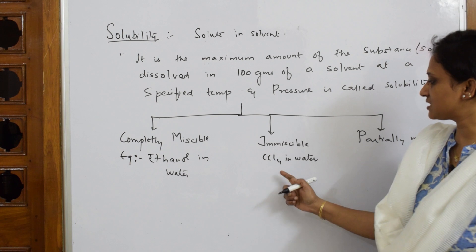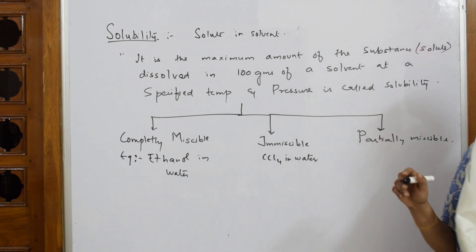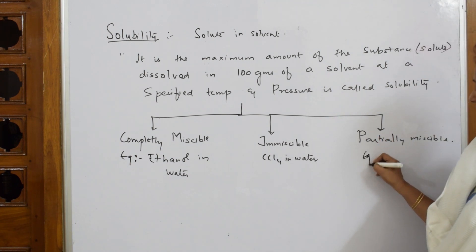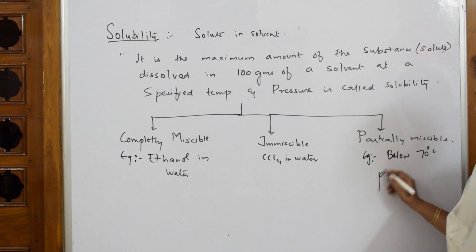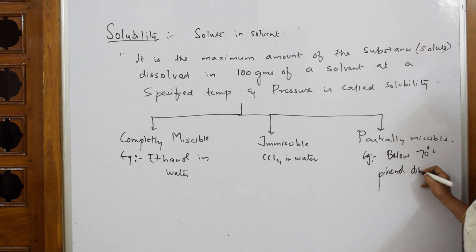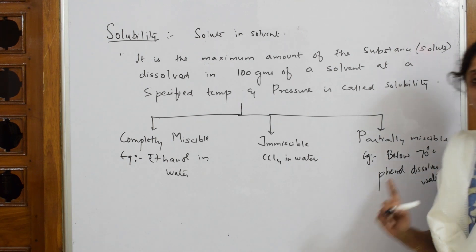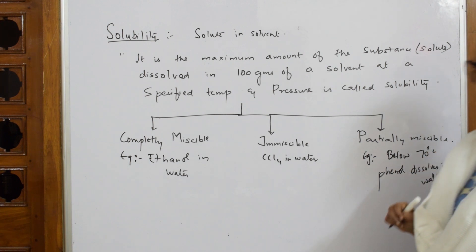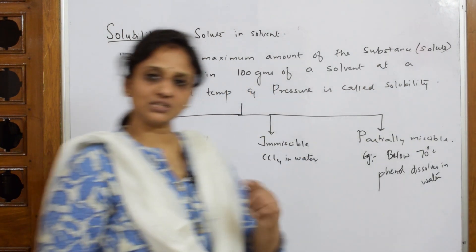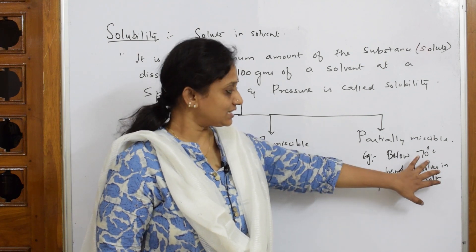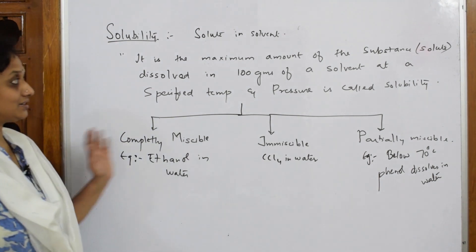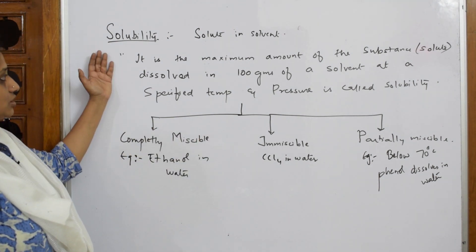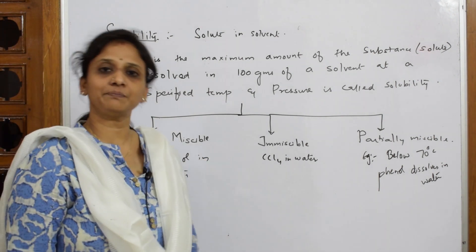For partially miscible, take phenol and water — below 70 degrees, phenol dissolves in water. Beyond 70 degrees, if you increase the temperature, it becomes immiscible and they form two separate layers. So for phenol, miscibility exists only up to 70°C. These are the basic definitions of solubility: completely miscible, immiscible, and partially miscible.